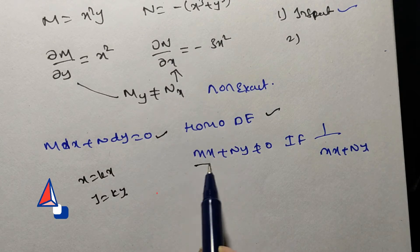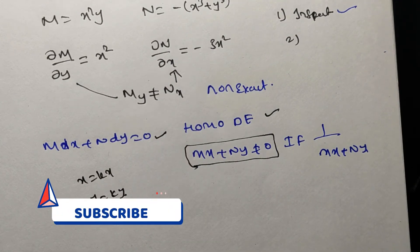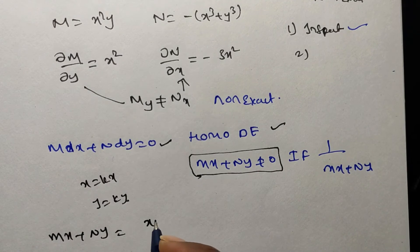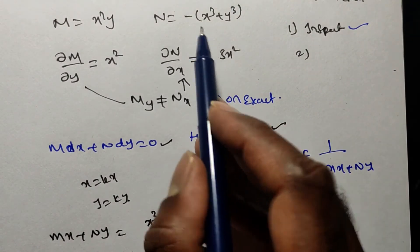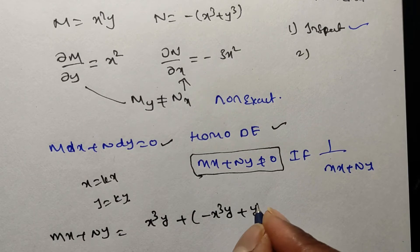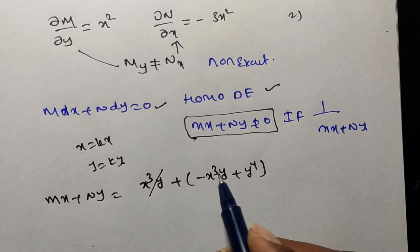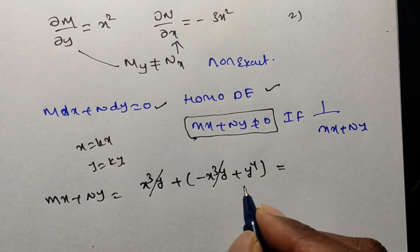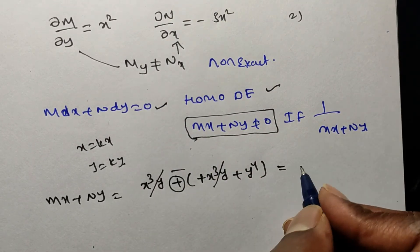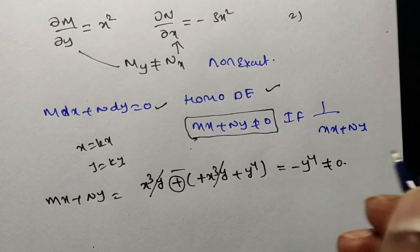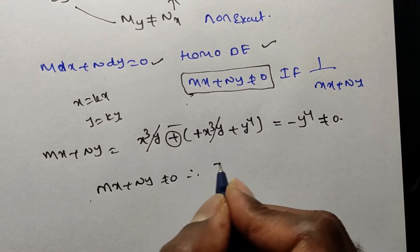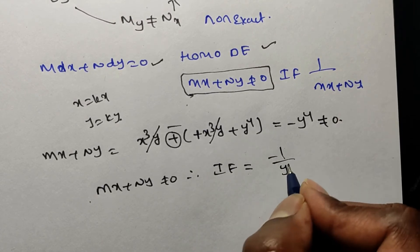Since it is homogeneous and non-exact, we verify whether Mx + Ny is zero or non-zero. Mx = x²y · x = x³y. Ny = −(x³ + y³) · y = −x³y − y⁴. So Mx + Ny = x³y − x³y − y⁴ = −y⁴. The x³y terms cancel, leaving −y⁴, which is not equal to 0.